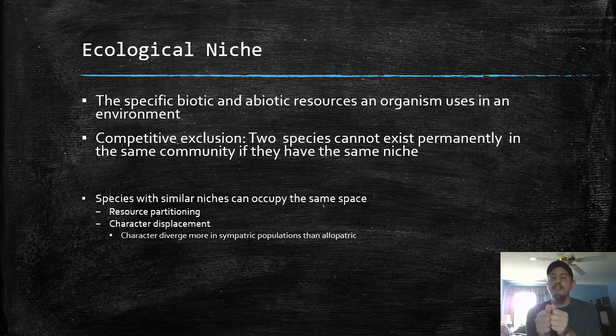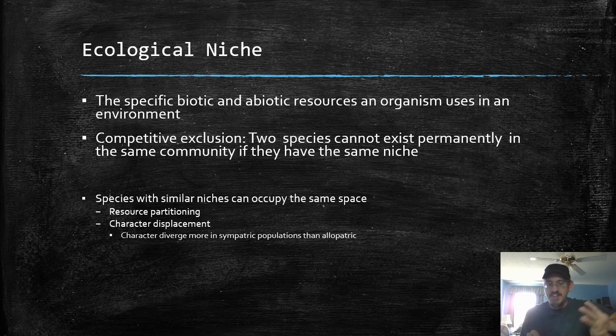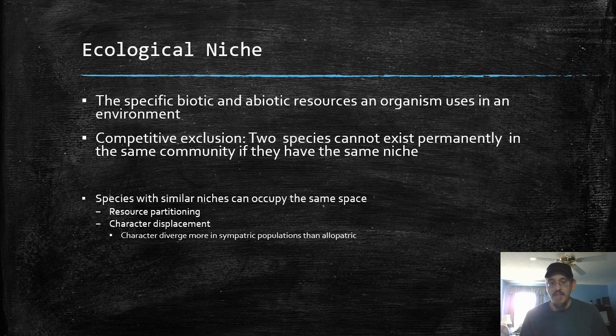Let's say you have two birds on the same island competing for the same kind of food. Eventually one might start eating different foods and develop slightly different traits, like a bigger bill, and it's eating bigger seeds, while the other one has a slightly smaller bill and starts eating different seeds. So they diverge a little bit — they evolve, the populations adapt to slightly different resources, and that affects the anatomy of the bird. That's character divergence. If these were allopatric species, meaning one lived on this island and one lived on another island, they wouldn't show that divergence.